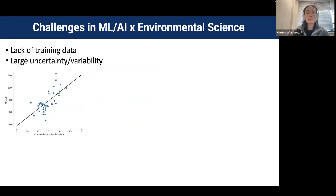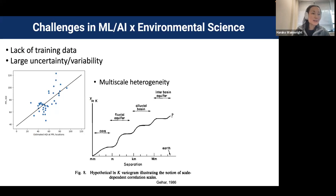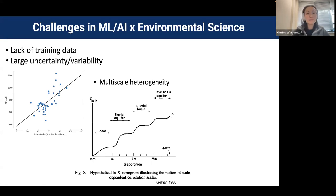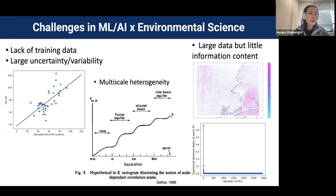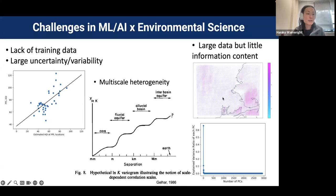There are challenges in machine learning and AI for environmental science. The lack of training data is combined with large uncertainty and natural fluctuation that cannot easily be explained. The scale of heterogeneity is often multi-scale — if you look at a bigger domain, you find bigger heterogeneity, which some call fractal. We also encounter datasets that look large but don't contain much information because of correlation — for example, a 100x100 wind field grid can compress to just 10 principal components.